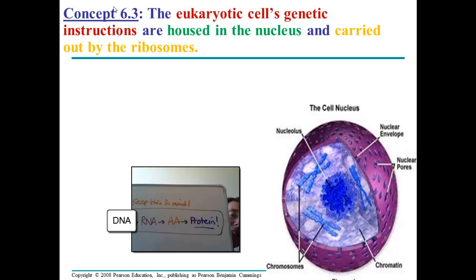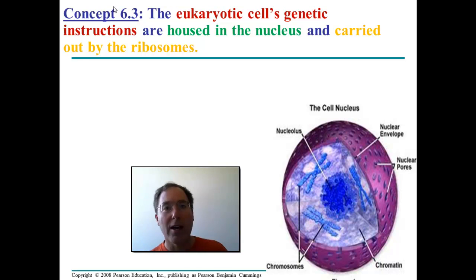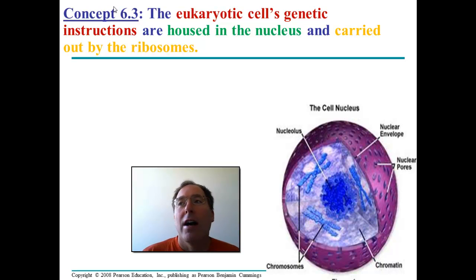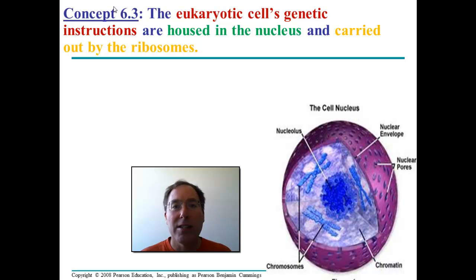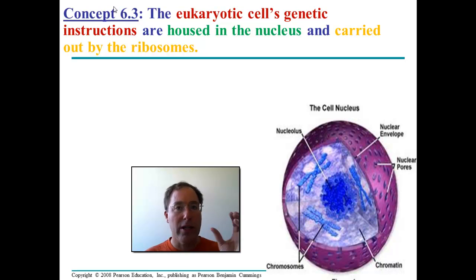We're going to deal with photosynthesis and cellular respiration also, but you've got to know that the only reason why DNA is important in living things is that it is eventually used to produce proteins. Section 6.3 talks about the very first steps of how the message on DNA is made into proteins. We're going to skip a few important steps.